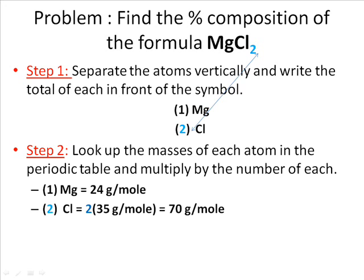You have one Magnesium at 24 grams per mole, you have two Chlorines. Each one is 35 grams per mole, so that equals 70 grams per mole for Chlorines.